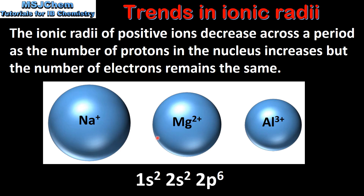Sodium has 11, magnesium has 12 and aluminium has 13 protons in its nucleus. However they all have the same electron configuration which means they have the same number of electrons — they are isoelectronic. So the sodium ion has 11 protons pulling on 10 electrons, the magnesium ion has 12 protons pulling on 10 electrons, and the aluminium ion has 13 protons pulling on 10 electrons. So the greater number of protons pulling on the same number of electrons means ionic radii decrease across a period.